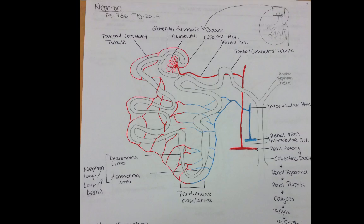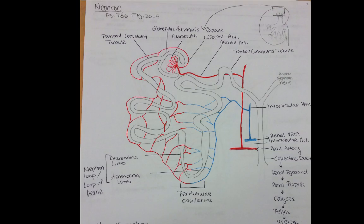The afferent arterioles enter into the Bowman's capsule or glomerular capsule, and when inside the capsule, the vessel is called the glomerulus. This is where blood plasma will lose some of its water, ions, sugar, proteins, and acids — a whole bunch of stuff. The red blood cells that aren't supposed to go into urine pass through the efferent arteriole. Blood in the urine is possible — if something is wrong with the membranes and they're too permeable in the glomerulus, blood cells can leak out and get put into the urine.